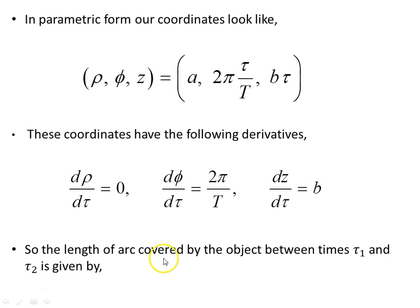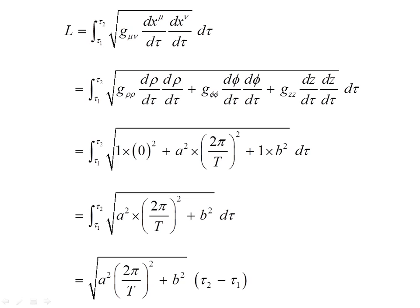Now what we want is the arc length covered by the object. What distance has it traveled along the arc, along the curve, between the times tau 1 and tau 2. And that will be given by this object here. So here we are. Back to this integral again.